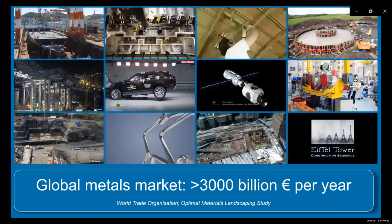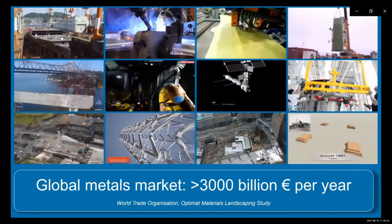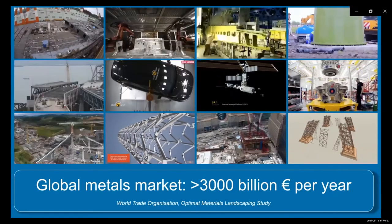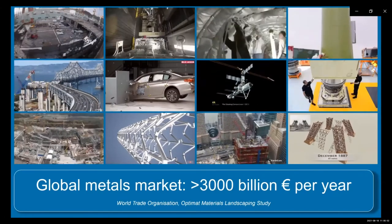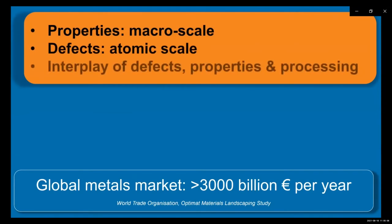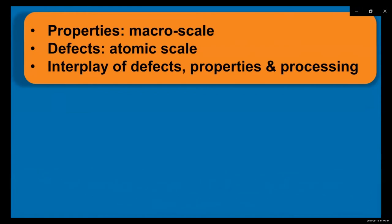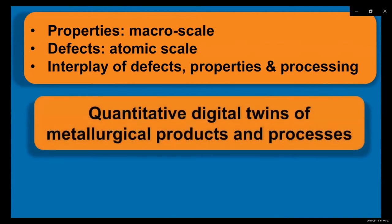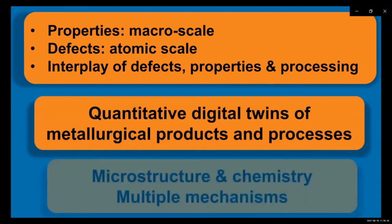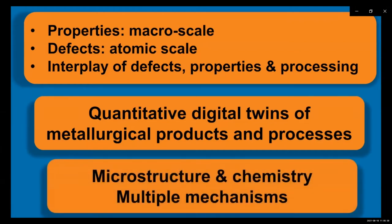The global markets for metallurgical and materials products exceed 3,000 billion euros per year, so it's really gigantic. The properties that characterize these products are often requested at the macroscopic and mesoscopic scale, but the defects are living at the atomic scale. That creates an inherent multi-scale problem between the defects that create certain properties and the processing that determines their distribution and final properties. When we design software tools for quantitative digital twins of such products and processes, we must include the microstructure. Of special interest is the constitutive response where microstructure and chemistry come into interplay.